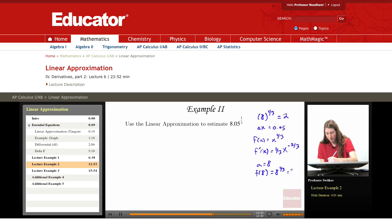And f prime of 8 is 1 third 8 to the negative 2 thirds, which is 1 third 2 to the negative 2nd, which is 1 third times 1 quarter, which is 1 twelfth.